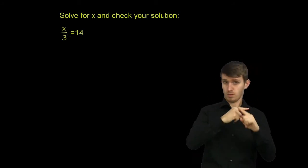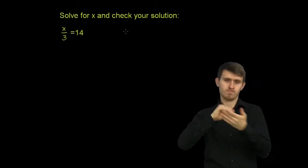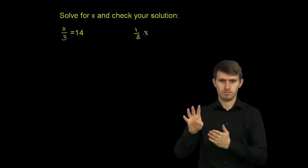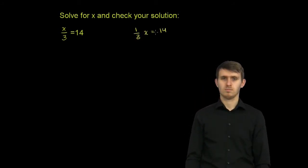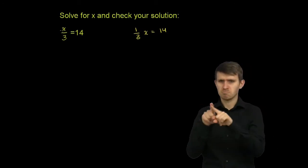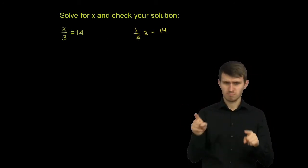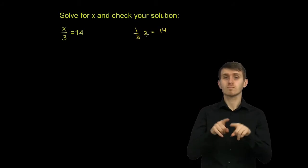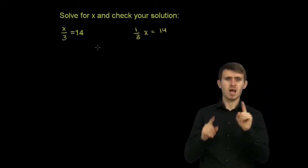And we have x divided by 3 is equal to 14. We could also write this as 1/3 x is equal to 14. Obviously, x times 1/3 is going to be x over 3. These are equivalent. So how can we just end up with an x on the left-hand side of either of these equations? These are really the same thing.